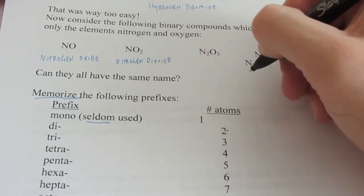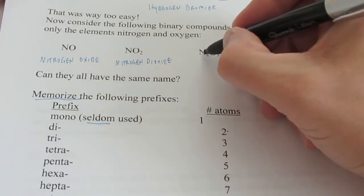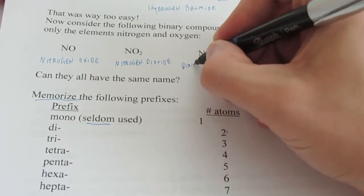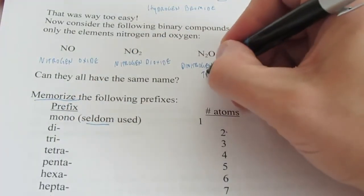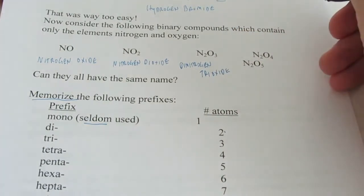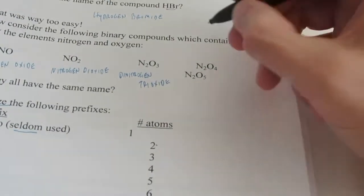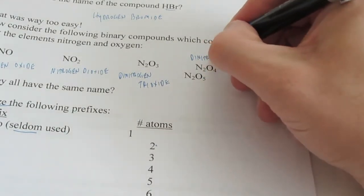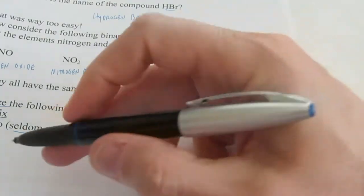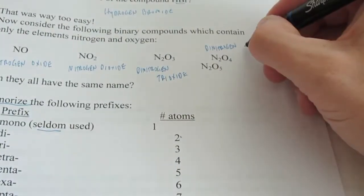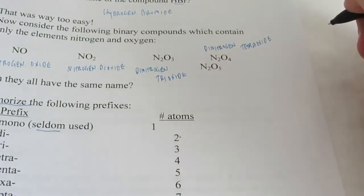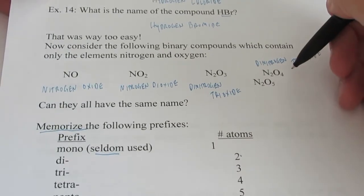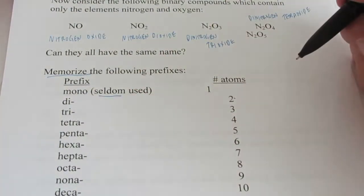How about this next one, N2O3? Well, N2, there's two nitrogens. So that would be di, so now we'd have dinitrogen. And three is tri, trioxide. Dinitrogen trioxide. N2O4? Okay, we're going to start with dinitrogen again. And four, the prefix for four is tetra. So dinitrogen tetraoxide. And what do you think N2O5 would be? If you said dinitrogen pentaoxide, you are correct.